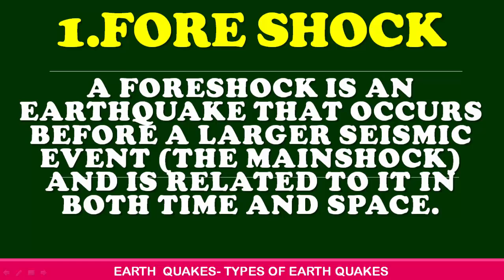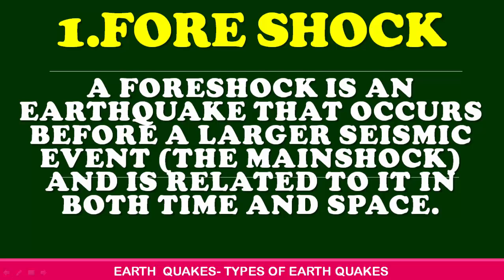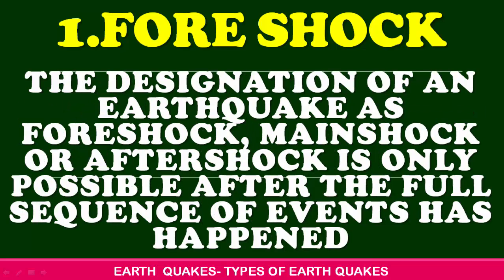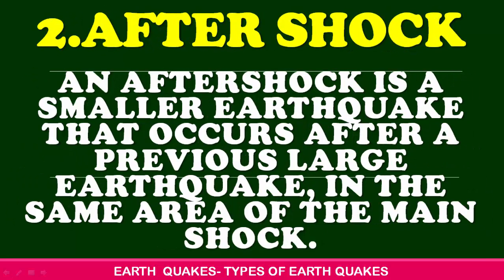1. Foreshock: A foreshock is an earthquake that occurs before a larger seismic event. The designation of an earthquake as foreshock, main shock, or aftershock is only possible after the full sequence of events has happened. 2. Aftershock: An aftershock is a smaller earthquake that occurs after a previous large earthquake in the same area.